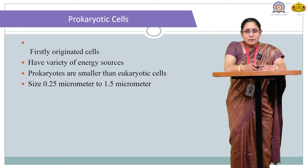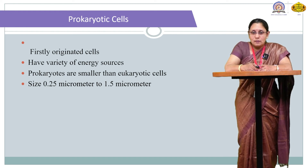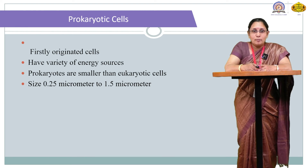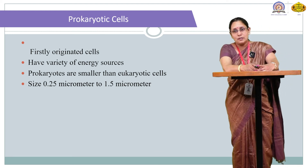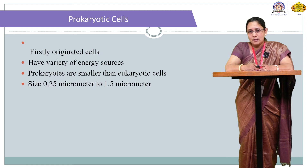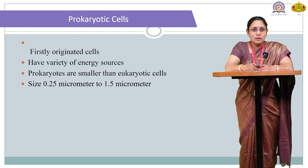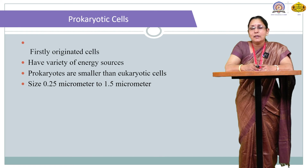Two types of cells exist: prokaryotic cells and eukaryotic cells. Prokaryotic cells are basically the first to originate. 'Pro' means previously and 'karyon' means nucleus — so prokaryotic refers to the originally nucleated cell. According to experiments, it has been proved that prokaryotic cells originated first, and later, eukaryotic cells were originated from prokaryotic cells.